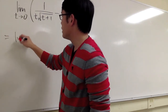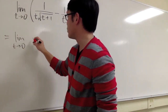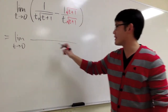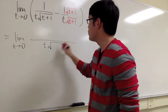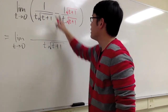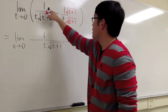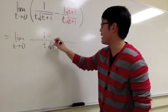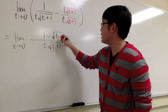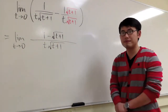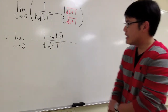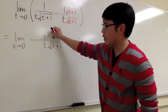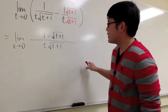This is going to be the limit as t approaches 0. They now have the same denominator: t times square root of t plus 1. On the top is 1 minus 1 times square root of t plus 1, which is just minus square root of t plus 1. If we plug in 0 into all the t's, we are going to end up with 0 on the top and 0 on the bottom.